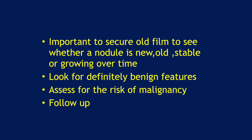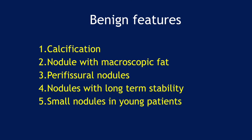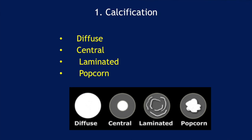What are these definitely benign features? One is calcification. Two is a nodule with macroscopic fat. Three is peripheral nodules. Four is nodules with long-term stability. Five is small nodules in young patients. There is a pattern of calcification which we can call definitely benign — it should be either diffuse, central, laminated, or popcorn calcification.